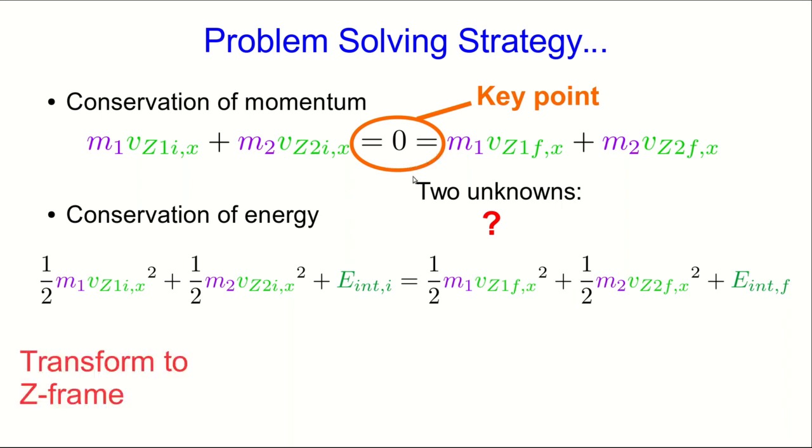So this is the strategy. Transform to the zero momentum frame. Write your conservation laws, and then solve the resulting system of equations, and then transform back to the original frame.